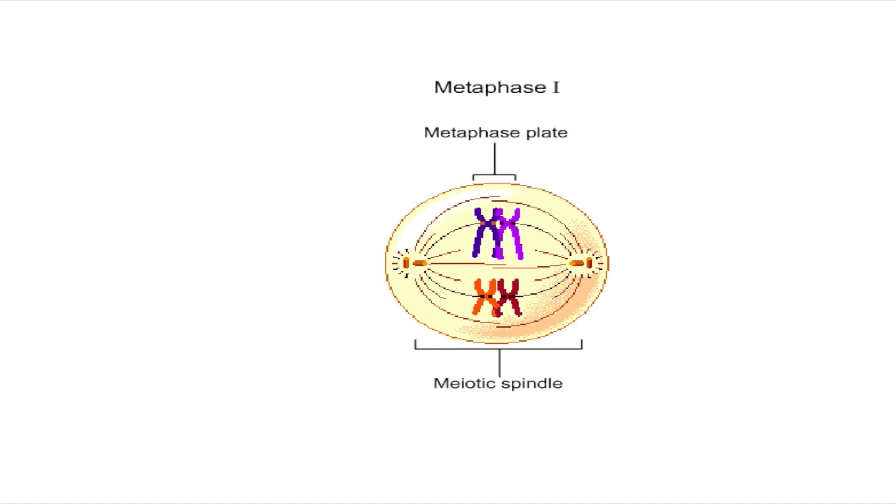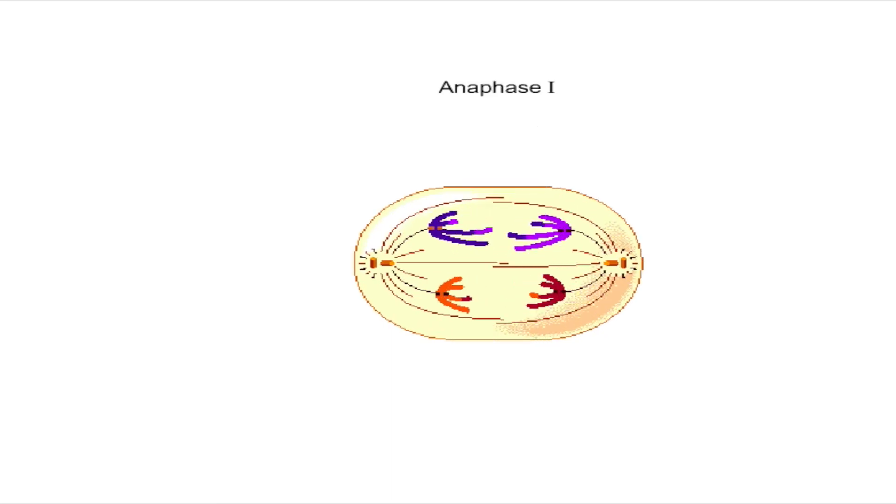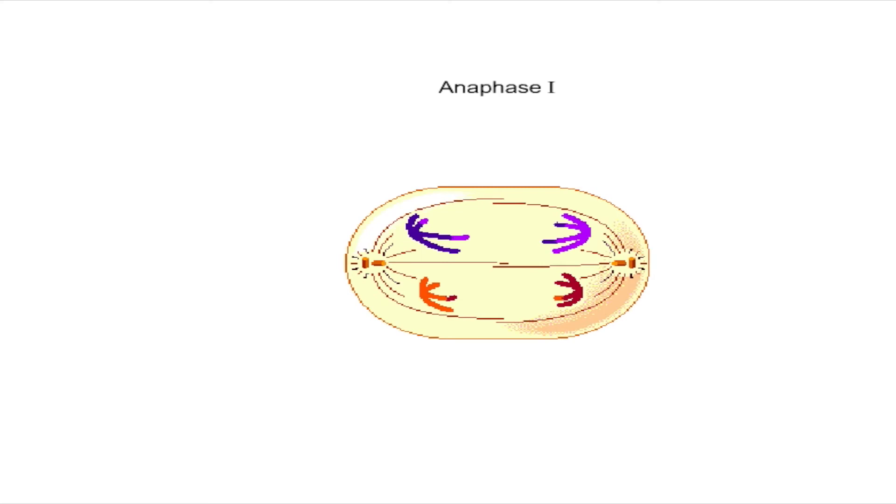In anaphase one, homologous chromosomes disjoin and each pair of sister chromatids migrates to an opposite pole as a result of the action of the spindle. The sister chromatids remain attached at their centromeres.